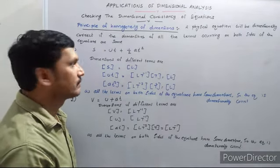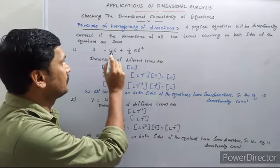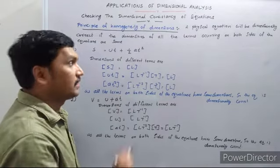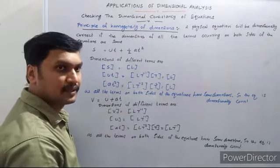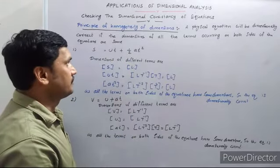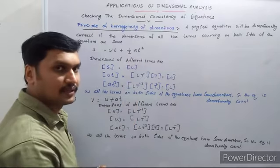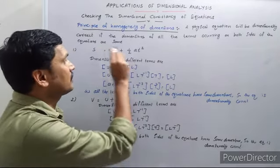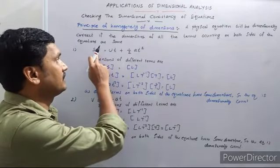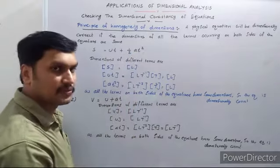Let us see an example. Here we have the equation s = ut + ½at². This is the position-time relation — the equation of motion. If an object is moving with a uniform acceleration a, with initial velocity u, the displacement of the object after a time t is given by s = ut + ½at².